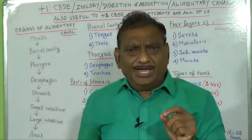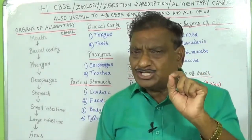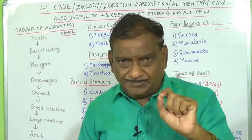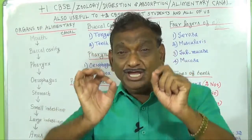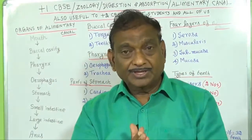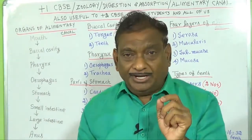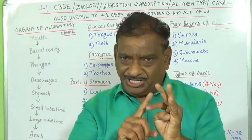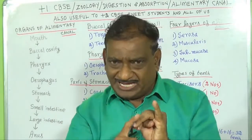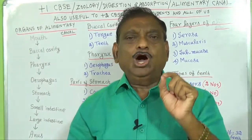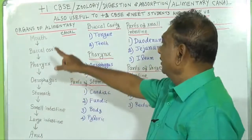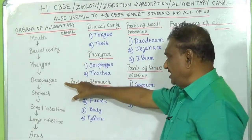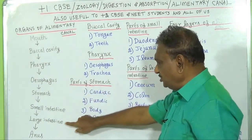First of all, I want to say what are the organs present in the Alimentary Canal, and after that, what are the parts contained in each organ. In the Alimentary Canal there are 8 organs: mouth, buccal cavity, pharynx, esophagus, stomach, small intestine, large intestine, and anus.